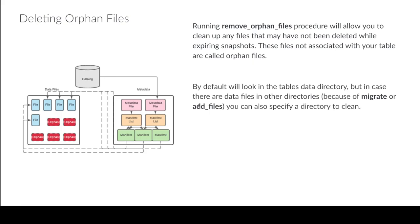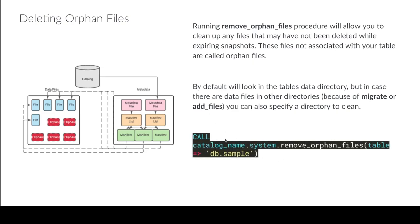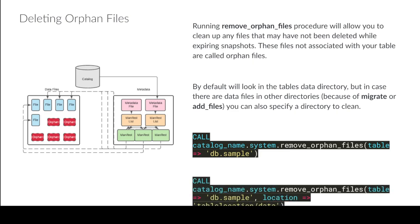It's a catch-all for files that shouldn't be there. You use call catalog_name.system.remove_orphan_files, specify the table, and let it do its thing. You can also specify a directory to check — for example, if you've added files from locations outside your default directory (like in a migration scenario), you can pass a specific location and it'll make sure there are no files in that folder that are no longer associated with the table.